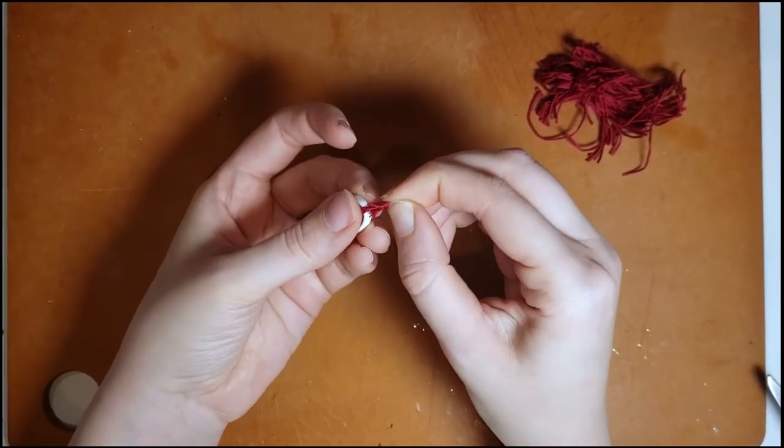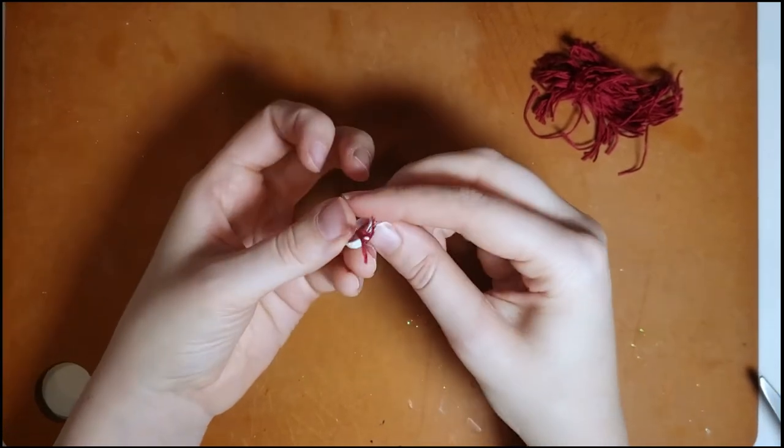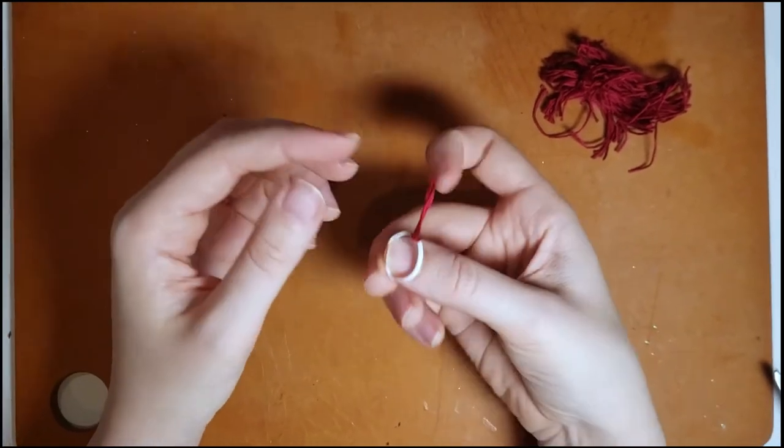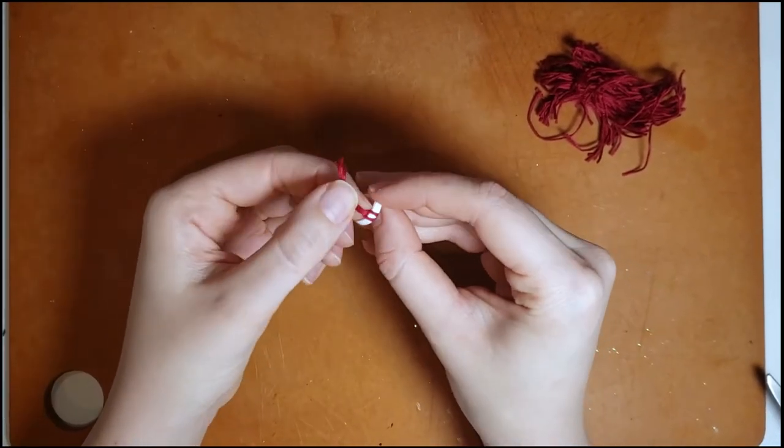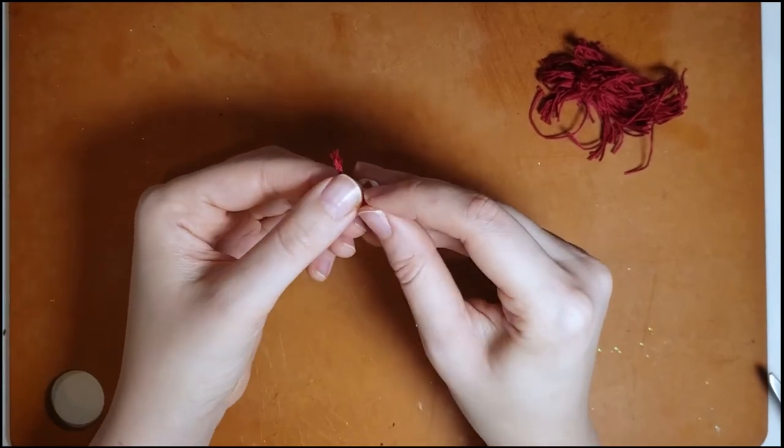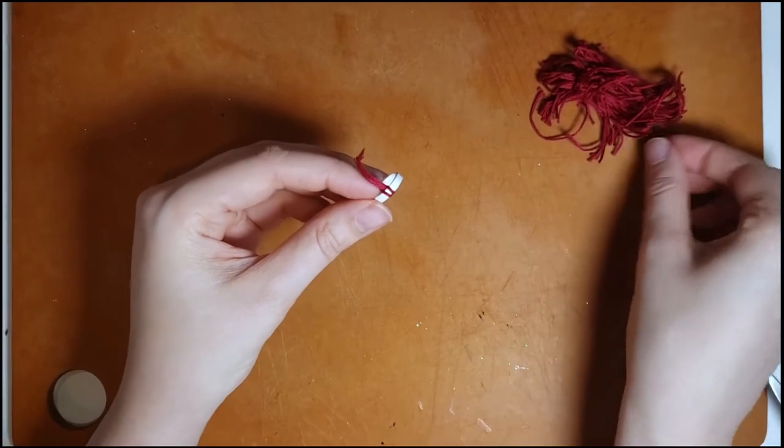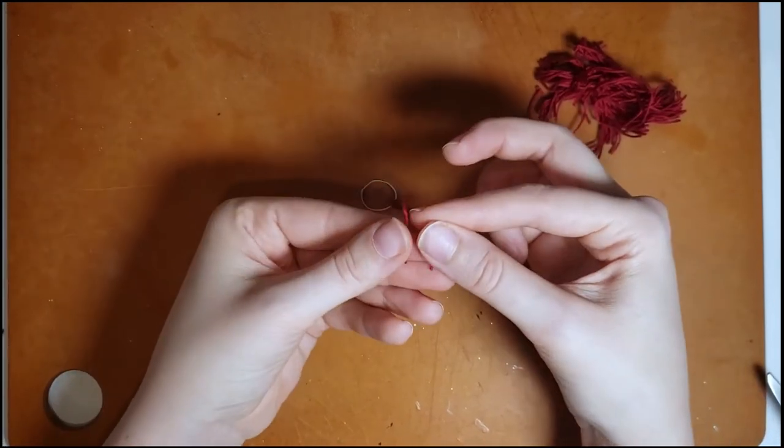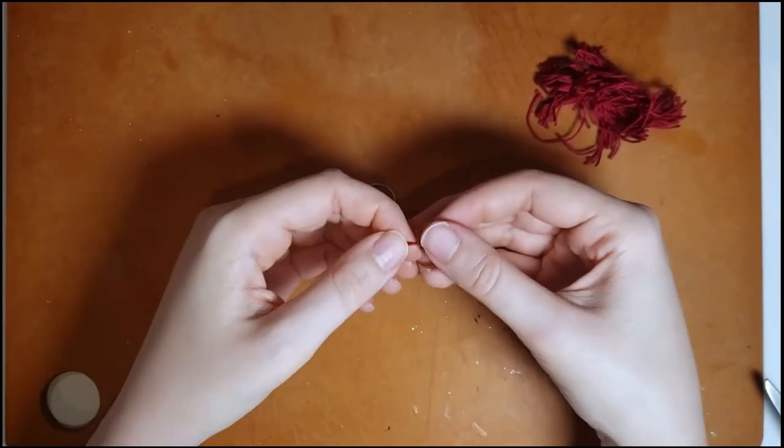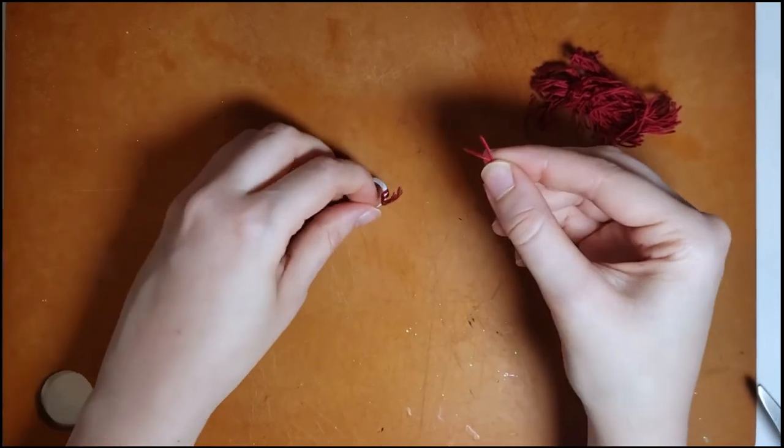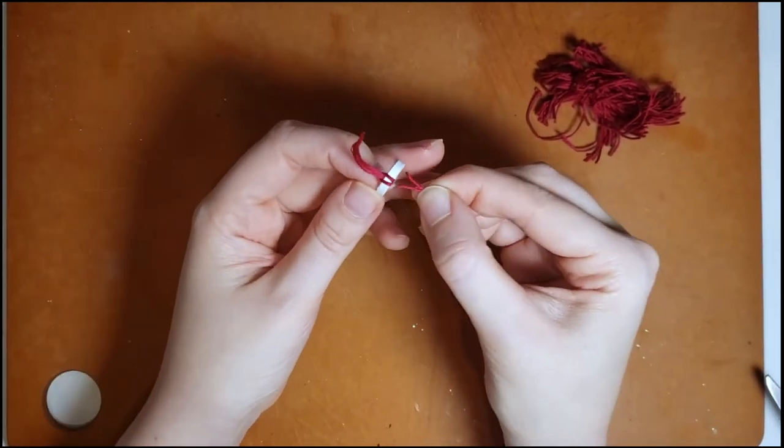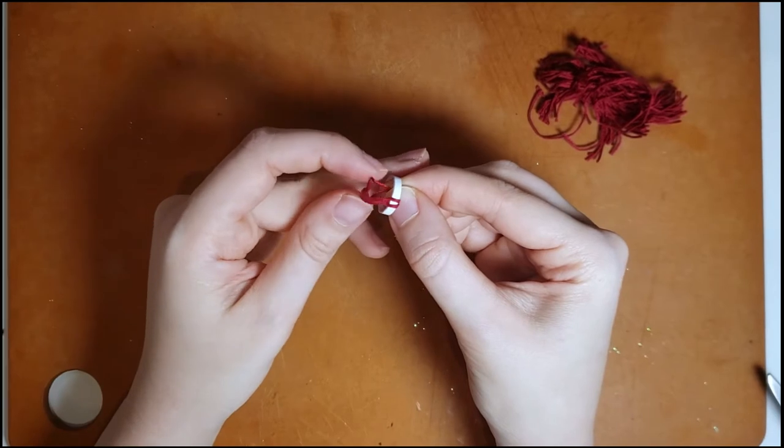So you're gonna fold the embroidery floss in half and wrap it over the band and thread it through the loop. You want to make sure that you're starting with the ends.